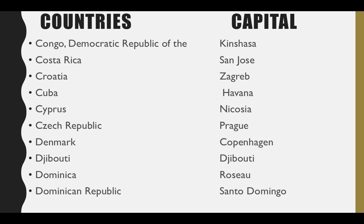Next is Costa Rica — its capital is San Jose. Next is Croatia — its capital is Zagreb. Next is Cuba — its capital is Havana. Next is Cyprus — its capital is Nicosia. Next is Czech Republic — its capital is Prague.